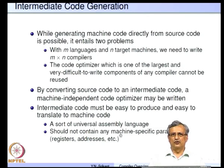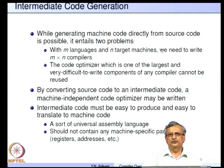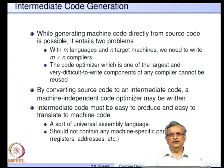Why do we need intermediate code? Generating machine code directly from source code is possible, but there are two problems. First, you need to write too many compilers: for m languages and n target machines, you would need m×n compilers. Inside a compiler, the code optimizer is one of the largest and most difficult components — if we generate machine code directly, we cannot reuse any part of this optimizer. About 50 percent of compiler source code is for the front end — lexical analyzer, parser, and semantic analyzer — and the other 50 percent is for the code optimizer and machine code generator, with about 35 percent just for the optimizer.